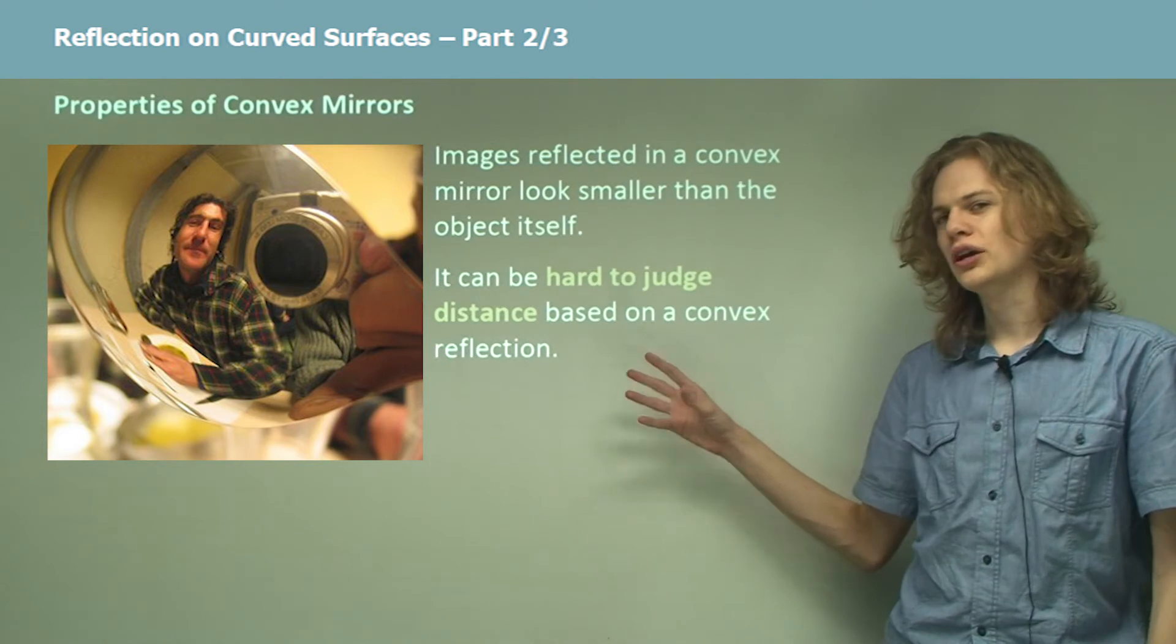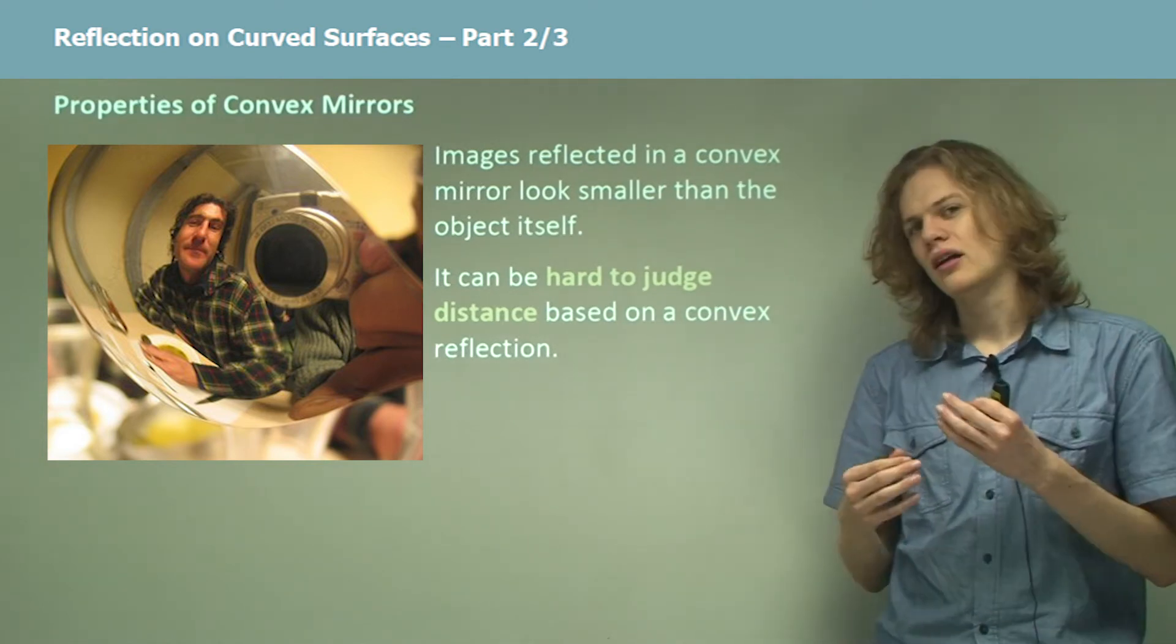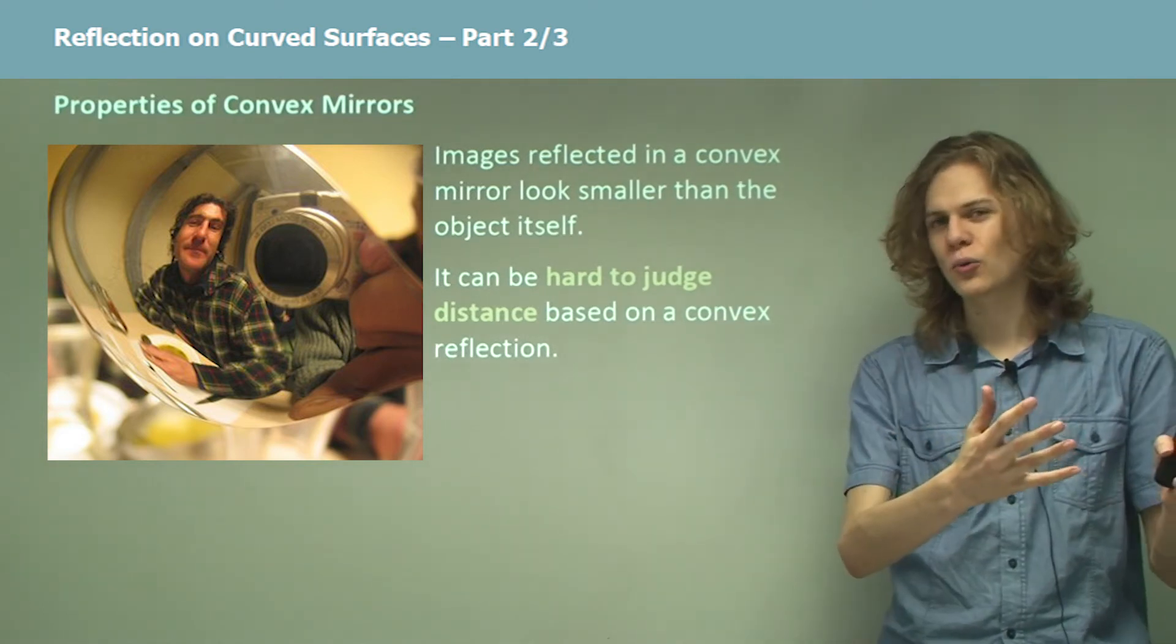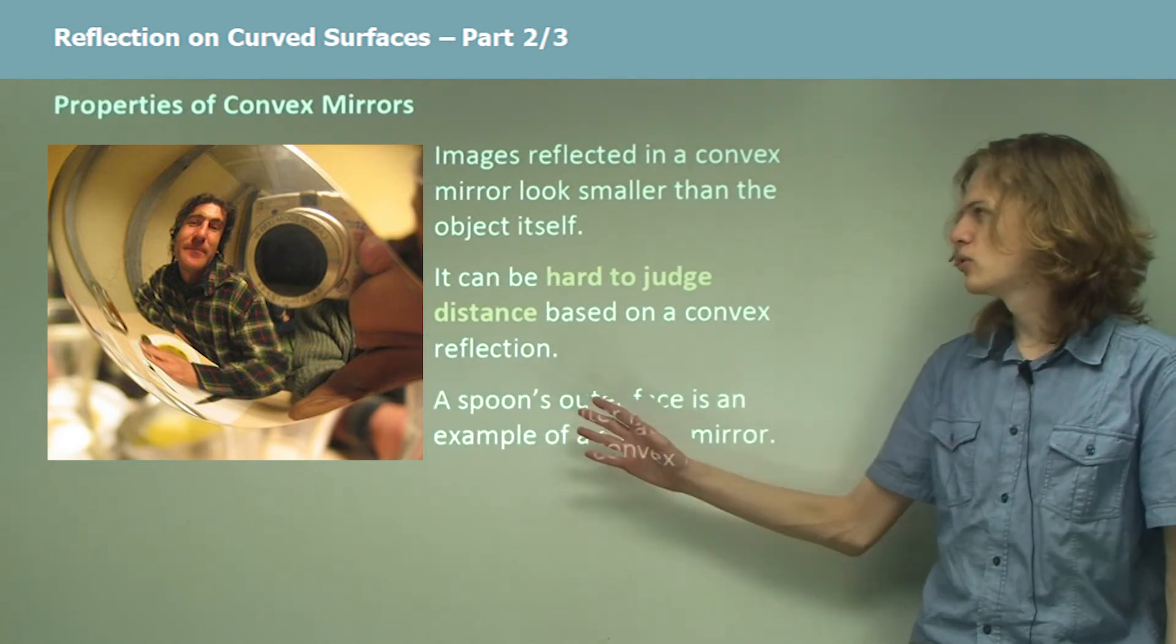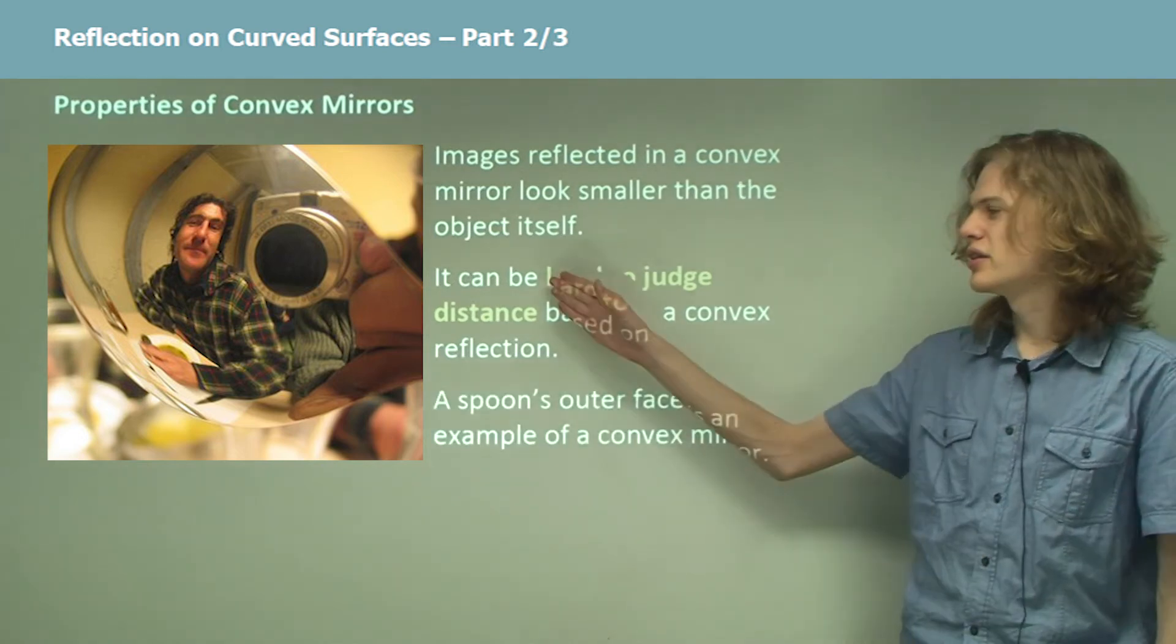If we see objects in a convex mirror, then they'll appear to be very far away even if they're quite close. A spoon's outer face is an example of a convex mirror. We can see that over here.